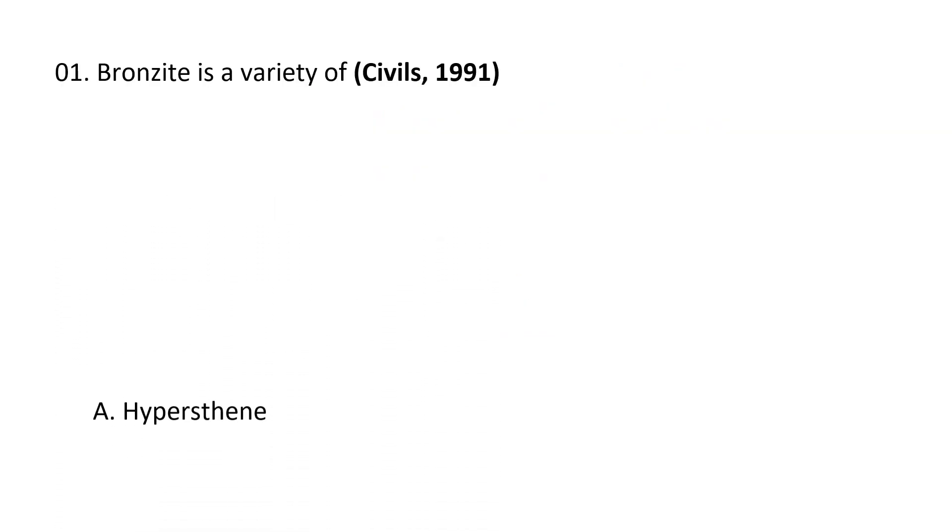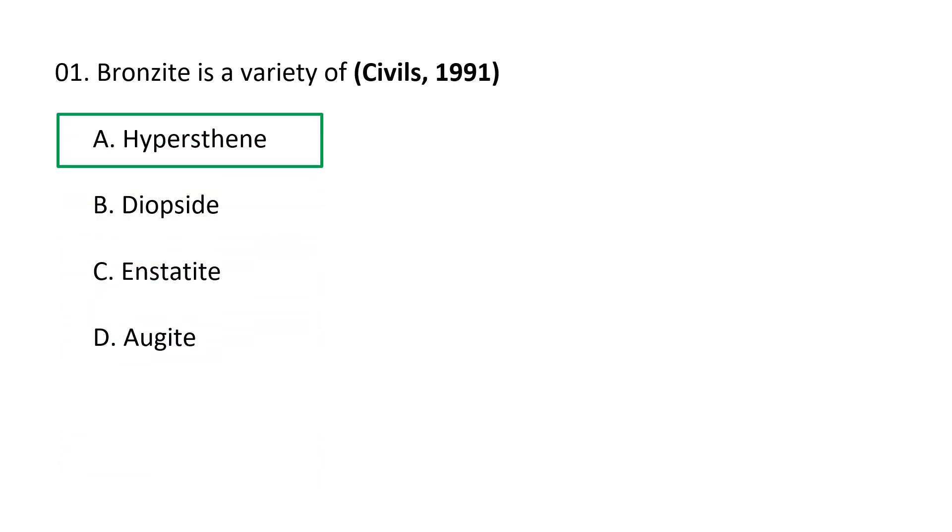First question. Bronzite is a variety of: A. Hypersthene, B. Diopside, C. Enstatite, D. Augite. So Bronzite is a variety of hypersthene. It belongs to pyroxene mineral group.